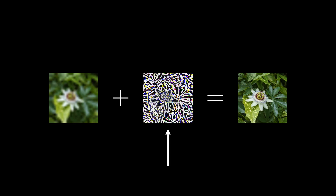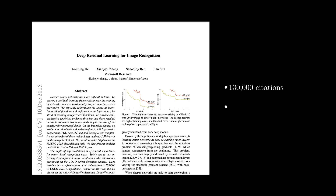Framing the problem in this way makes the network's life easier, as it doesn't need to retain the entire input signal. This was the same intuition that inspired the authors from the 2015 paper 'Deep Residual Learning for Image Recognition.' This paper is now considered seminal in deep learning, with over 130,000 citations. It is rare to run into a model architecture in deep learning today that doesn't utilise the contributions from this paper in some fashion.